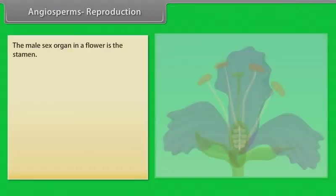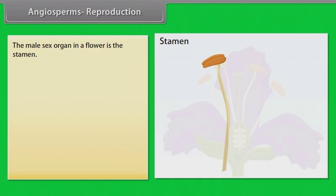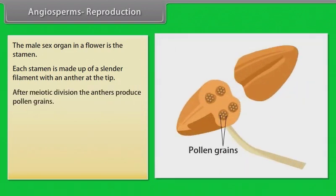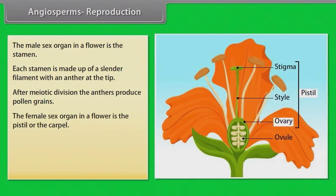The main male sex organ in a flower is the stamen. Each stamen is made up of a slender filament with an anther at the tip. After meiotic division, the anthers produce pollen grains. The female sex organ in a flower is the pistil or the carpel.